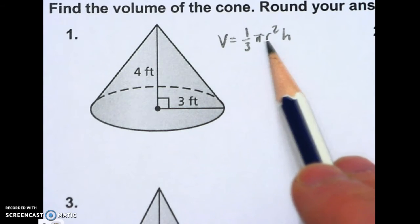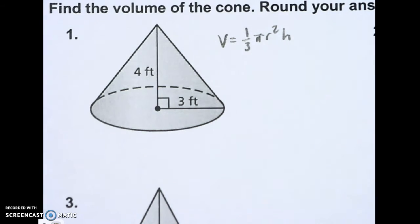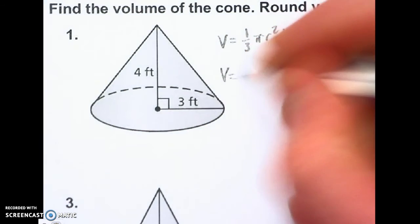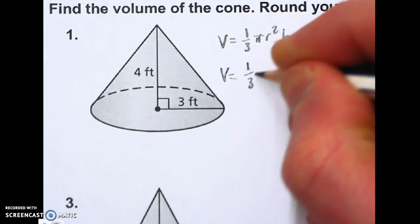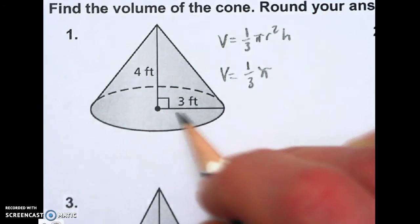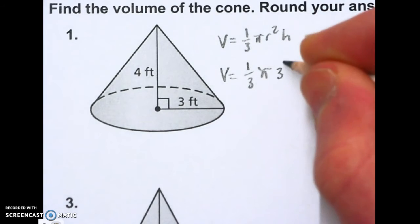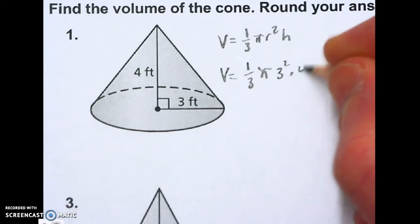I'm going to plug in my radius and my height. It's just one-third the size of a cylinder. So I'm going to have V equals one-third pi. My radius is 3, so 3 squared, times my height, which is 4.